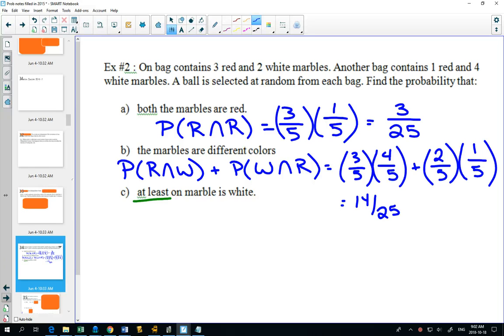And the other possibility is to do the opposite. What's the opposite of getting at least one white marble? Two red ones. No white marbles. We already know that the complement of one white marble is two red marbles. And so we can go 100% or 1 minus 3 out of 25. One is 25 out of 25 would leave me with 22 out of 25 that have at least one white marble.